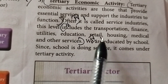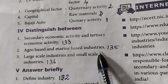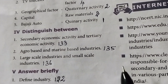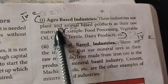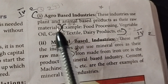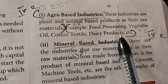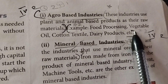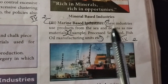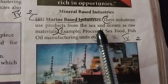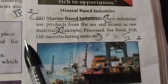Roman numeral four, second question — distinguish between agro-based and marine-based industries. Take page number 135. Agro-based industries use plant and animal-based products as their raw material. Examples: food processing, vegetable oil, cotton textile, and dairy products.